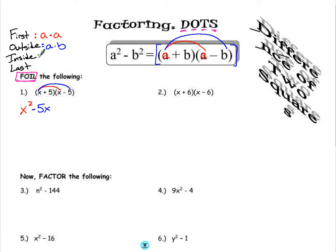Then I look at inside. Inside would be the second element of the first term times the first element of the second term. So here I'm going to do 5 times x, which gives me positive 5x. The last thing I'm going to FOIL is last, which means the second term of the first expression times the second term of the last expression. So 5 times negative 5 is going to give me negative 25.